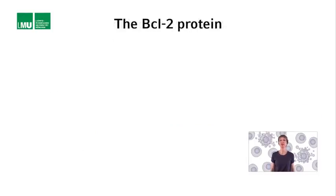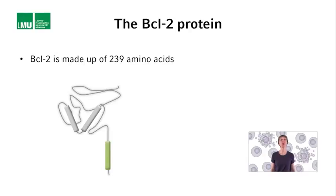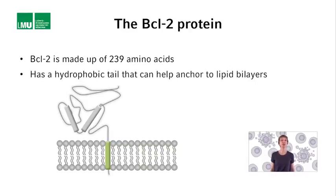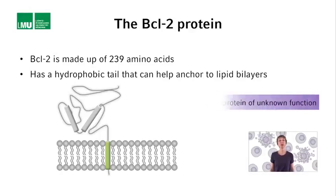What kind of protein does the BCL2 locus code for? The human BCL2 locus codes for a protein of 239 amino acids that possesses a hydrophobic tail, which can mediate association with lipid bilayers. However, in 1986, when the sequence of the BCL2 protein became available, it showed no homology to any other known protein, and its sequence did not suggest any specific function. The BCL2 protein was therefore a novel protein of unknown function. However, the T1418 translocation suggested that this protein plays an important role in the development of follicular lymphomas, and was therefore definitely worth studying.